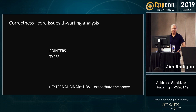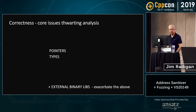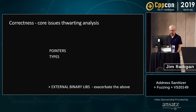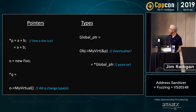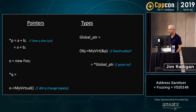What I'm going to try to do is narrow it down and define correctness explicitly. The real core problem for analysis is pointers and types, and external binaries only exacerbate both those problems. If P aliases A or B, then A plus B is not a redundant sub-expression — you can begin to see the idea of aliasing.